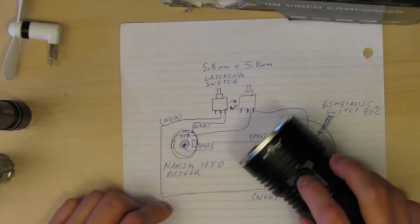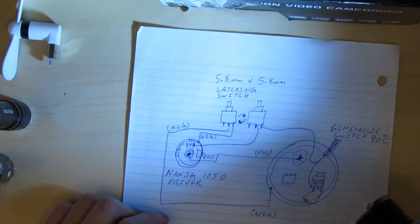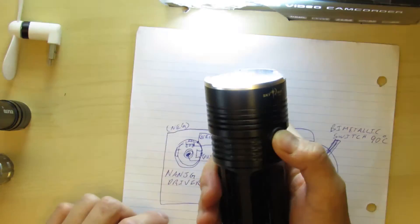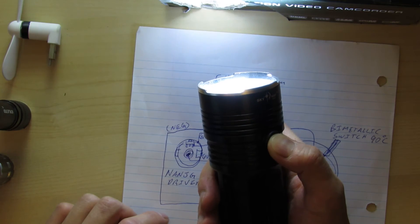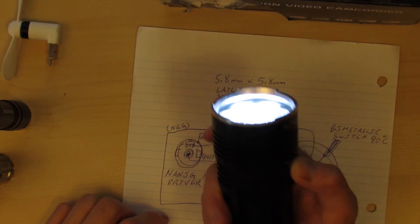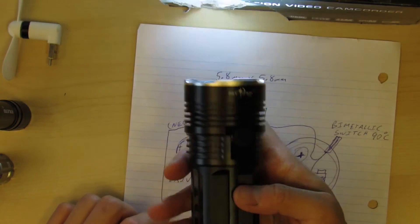That's how you can add some more functionality to your Skyray King. We can go back to low, wait for that blink, and then turn off the flashlight. Now you've got medium, high, low, and you can lock and do whatever you want. If you use your flashlight on low a lot, you can leave it on low and always get back to low when you need it.